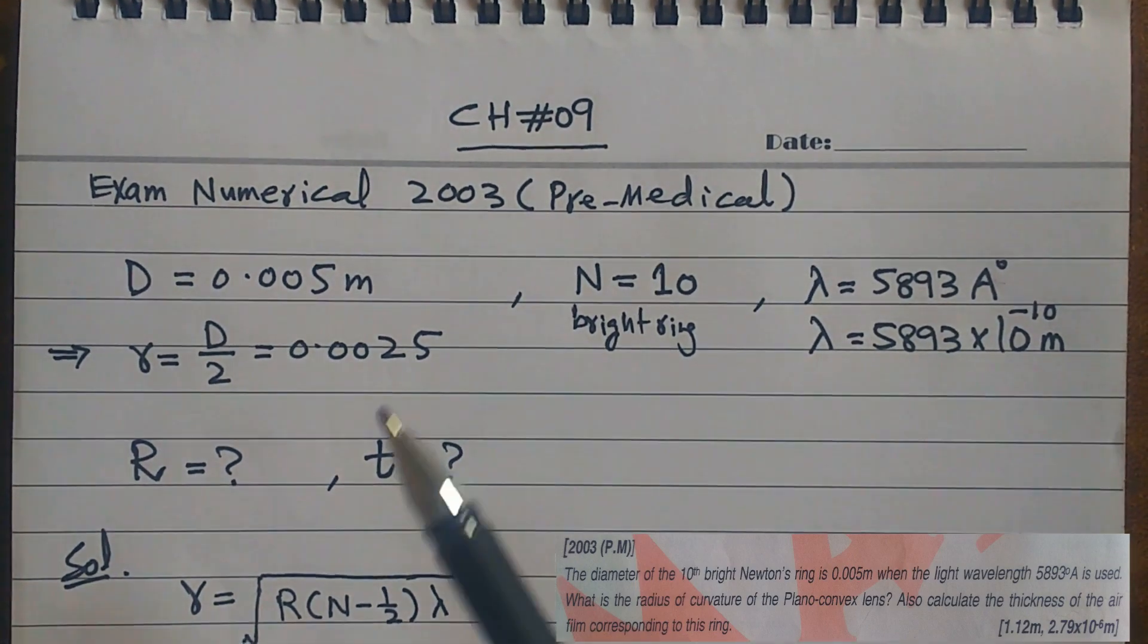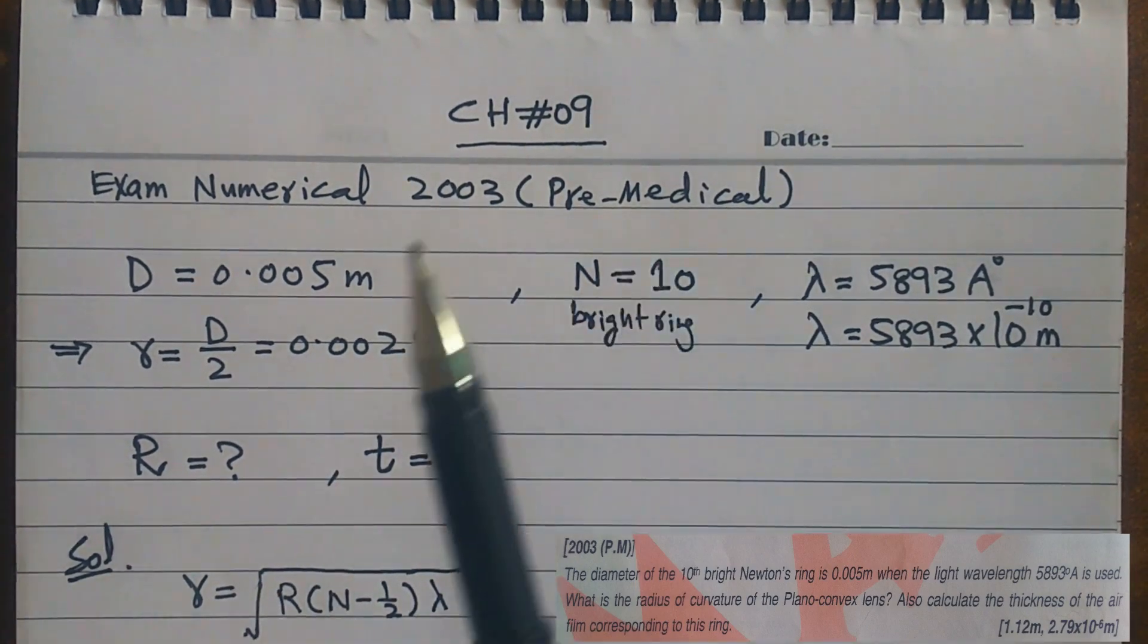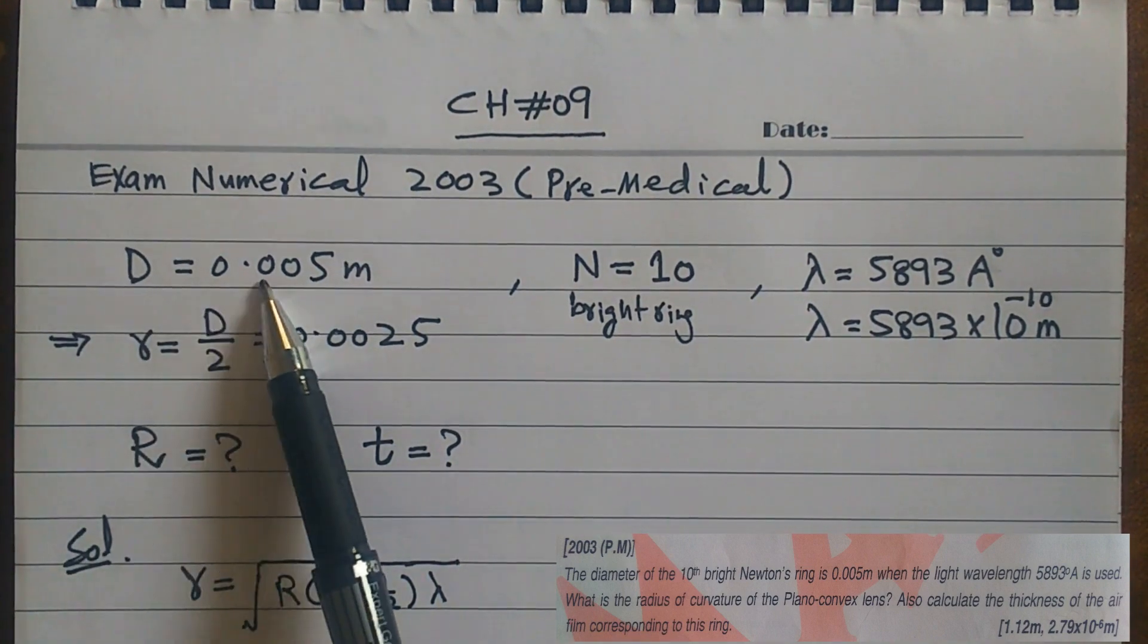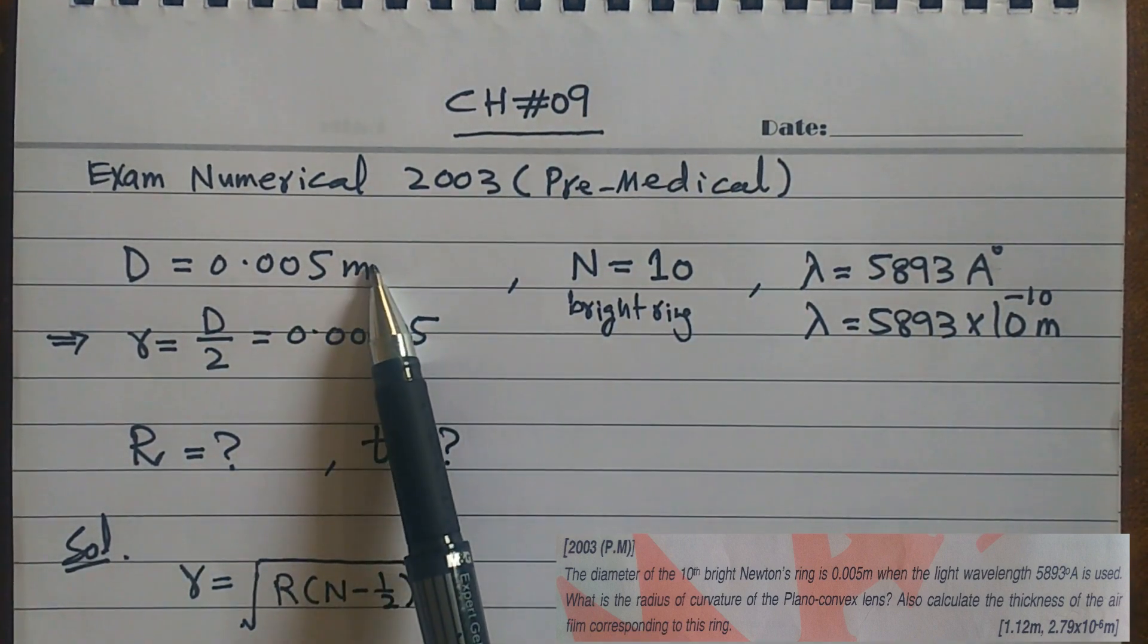In the name of Allah, this is the Pre-Medical Numerical 2003. In this numerical problem, it says that the diameter of the ring is 0.005 meters. Because I have told you that we don't need diameter, we need radius.